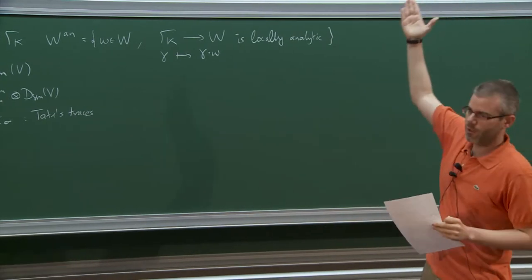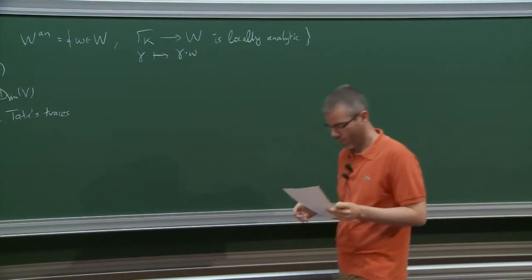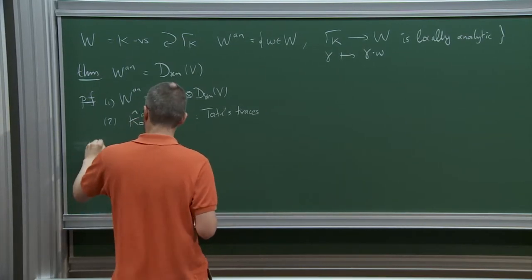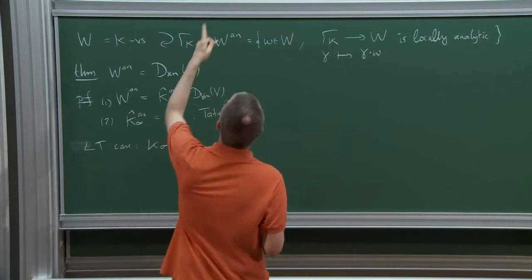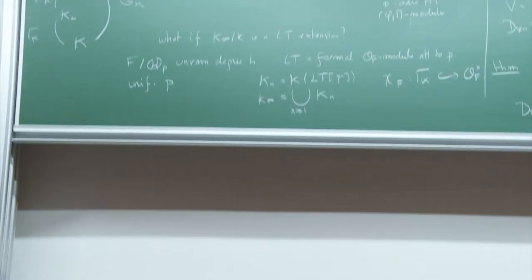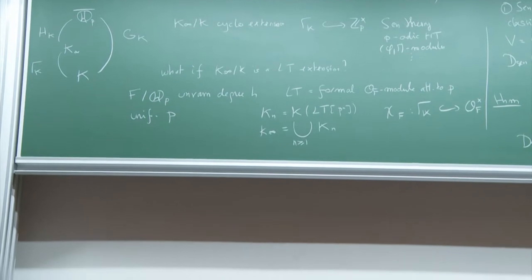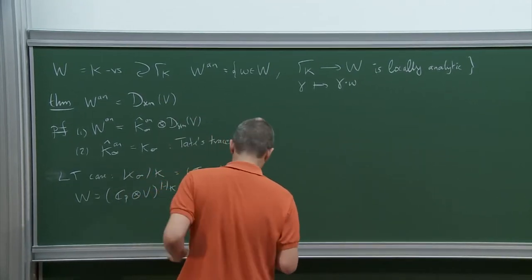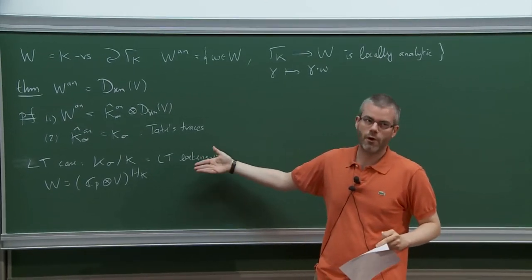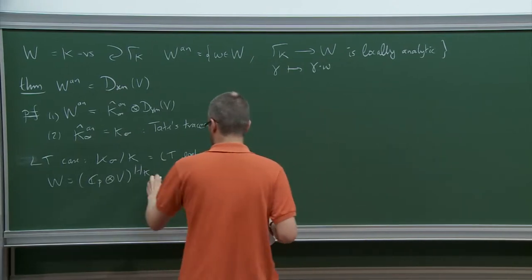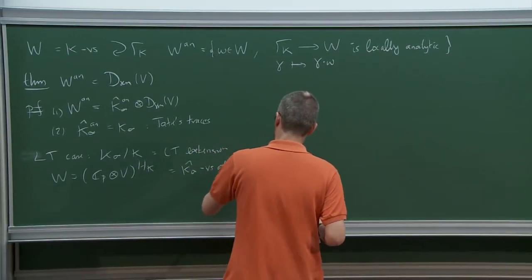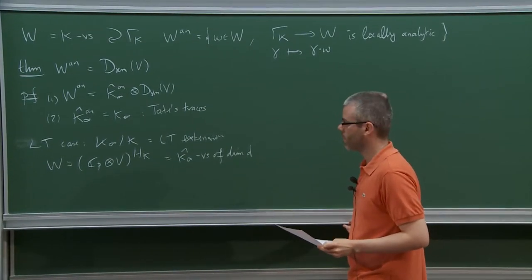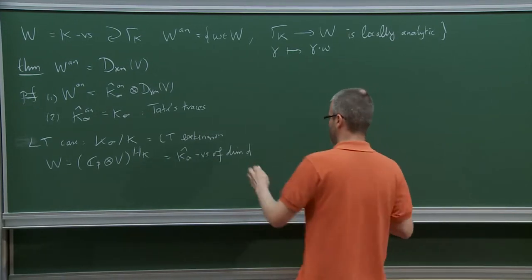If you want to replace the cyclotomic extension by the Lubin-Tate extension, this definition gives something interesting. So assume now we are in the Lubin-Tate setting: K_∞ over K is now the Lubin-Tate extension. Once again W is C_p ⊗ V invariant under H_K, which is by an easy argument of Galois descent a K_∞-hat vector space of dimension d — the same dimension as V — equipped with an action of Γ_K.